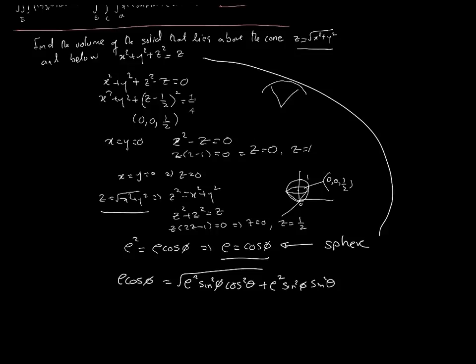Taking ρ² sin²φ as a common factor inside the square root gives cos²θ + sin²θ = 1, so we get ρ sinφ after taking the square root. This means cosφ = sinφ, which happens when φ = π/4.